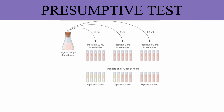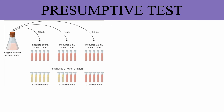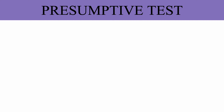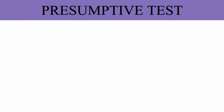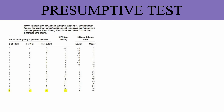In the presumptive test, a series of lactose broth tubes are inoculated with measured amounts of the water sample to be tested. The series of tubes may consist of 3 or 4 groups of 3, 5, or more tubes. The more tubes utilized, the more sensitive the test. Gas production in any of the tubes is presumptive evidence of the presence of coliforms. The most probable number of coliforms per 100 ml of water sample can be estimated by the number of positive tubes.